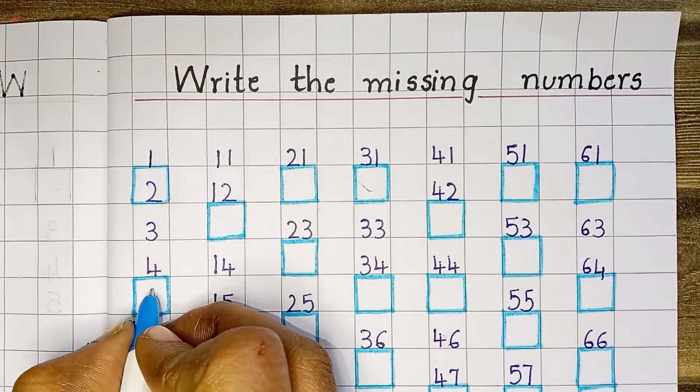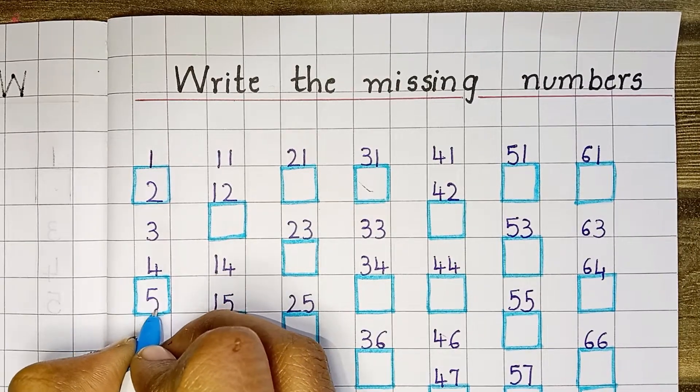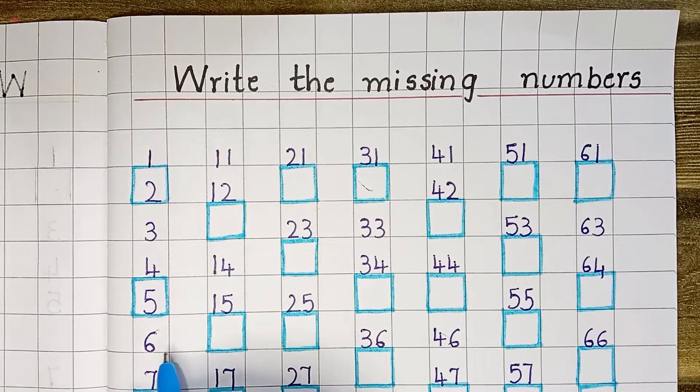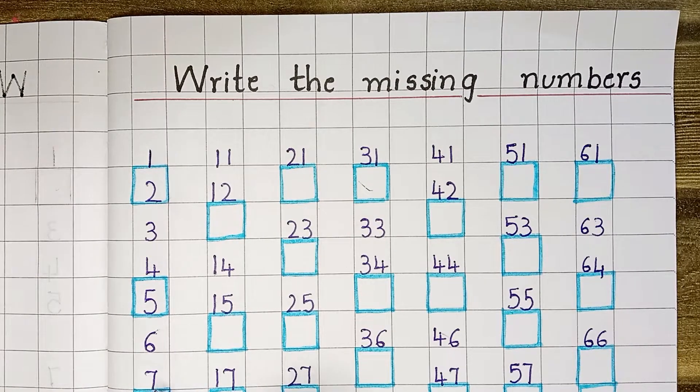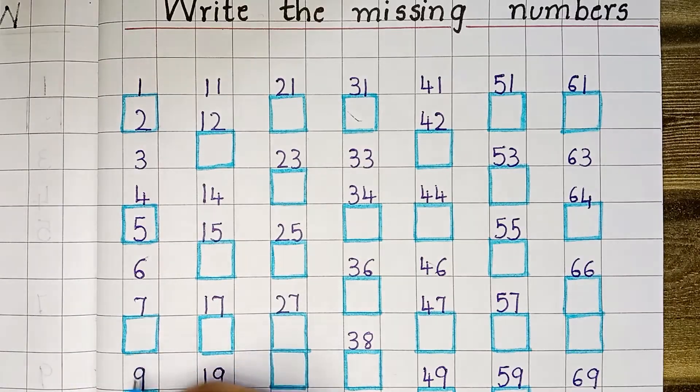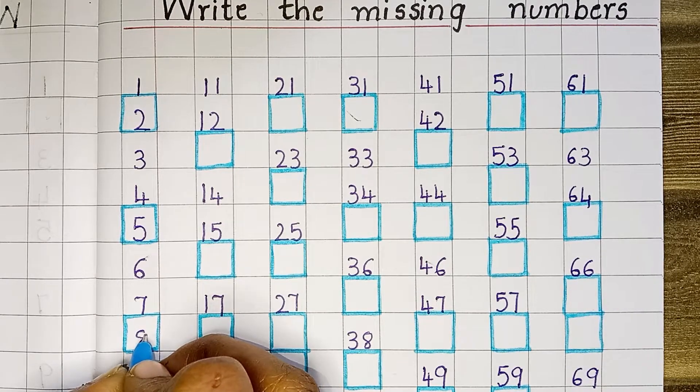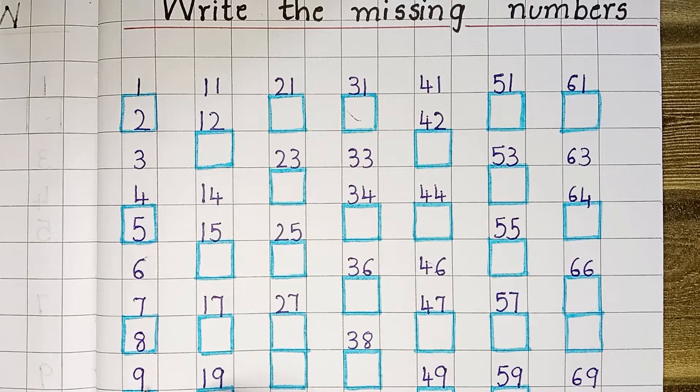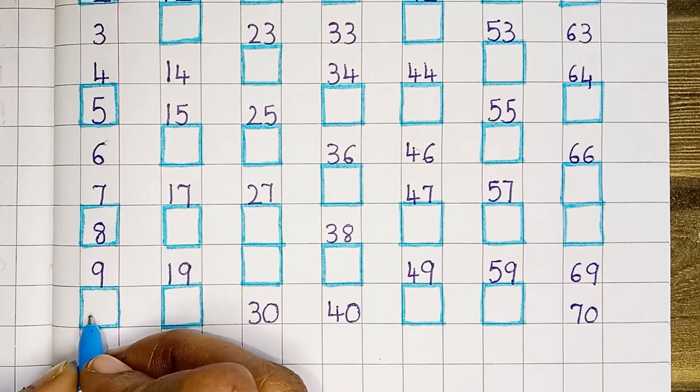What comes after 4? 5. 6. 7. What comes after 7? 8. 9. After 9, 10.